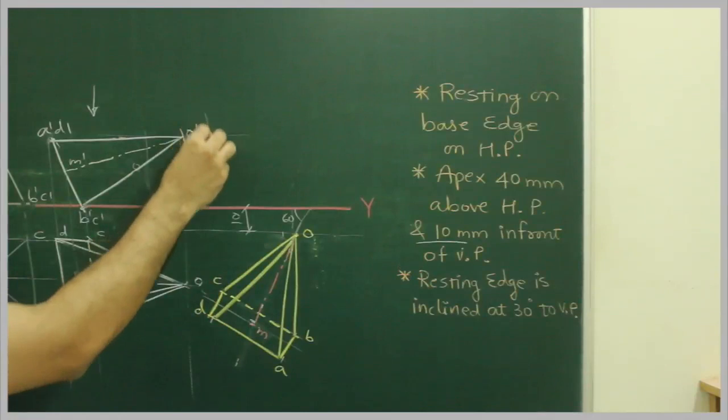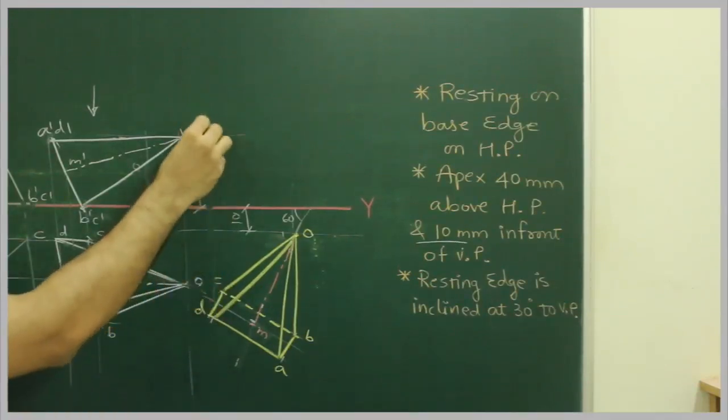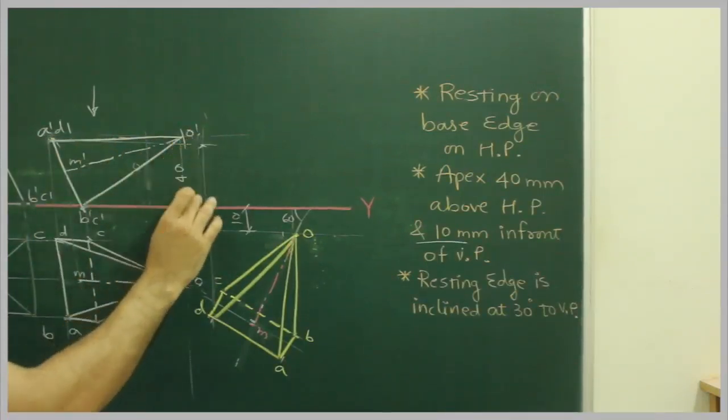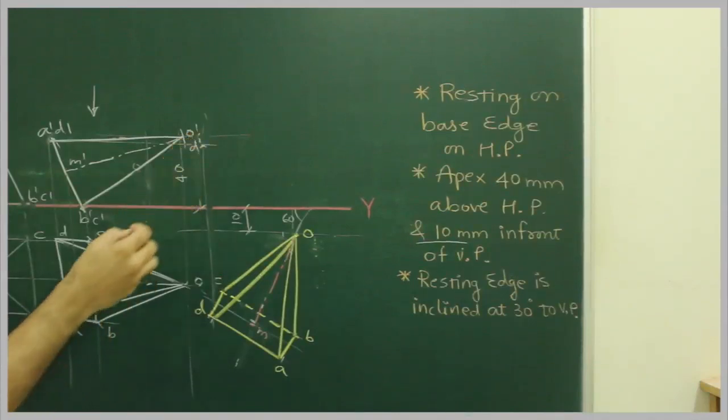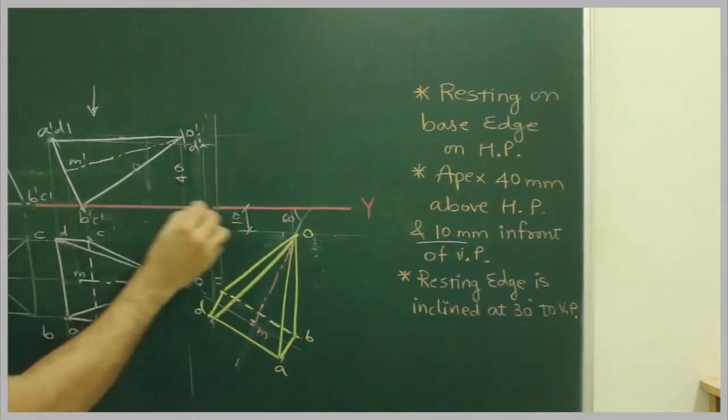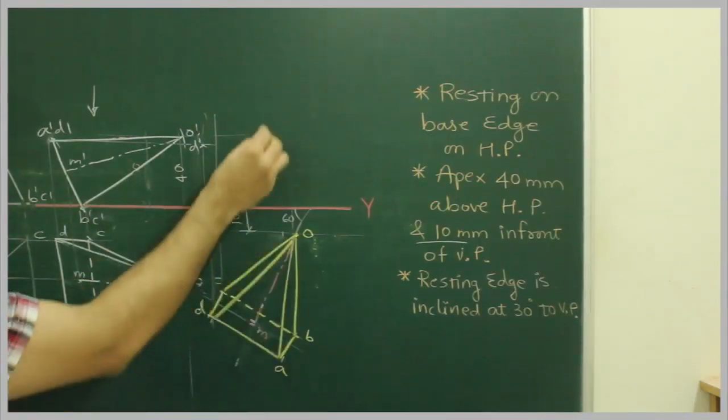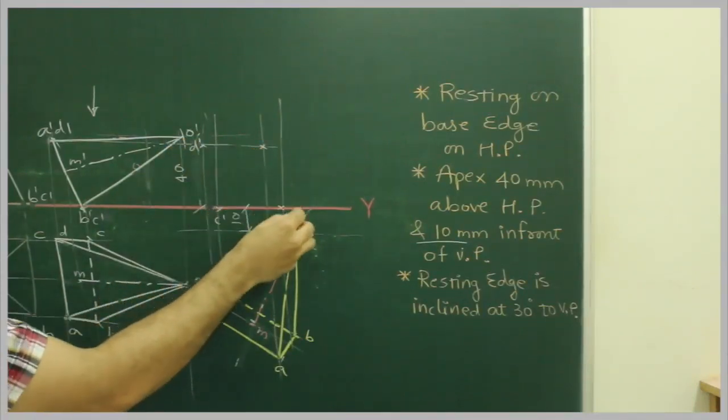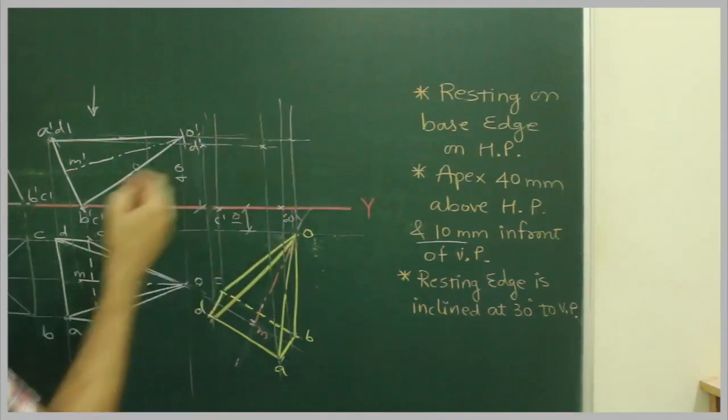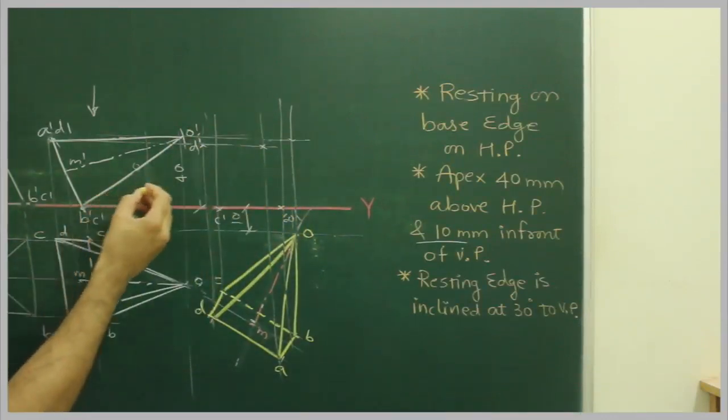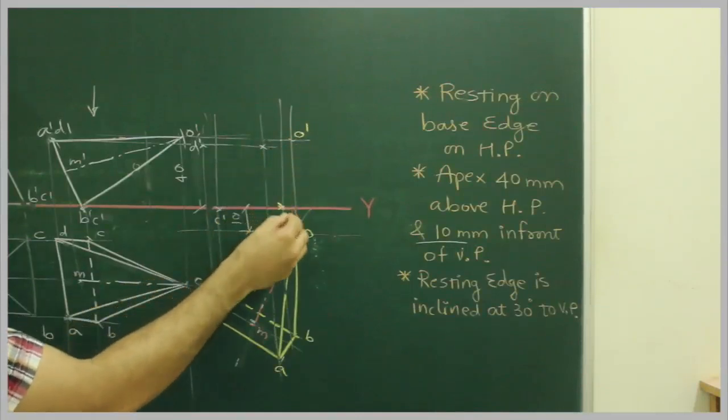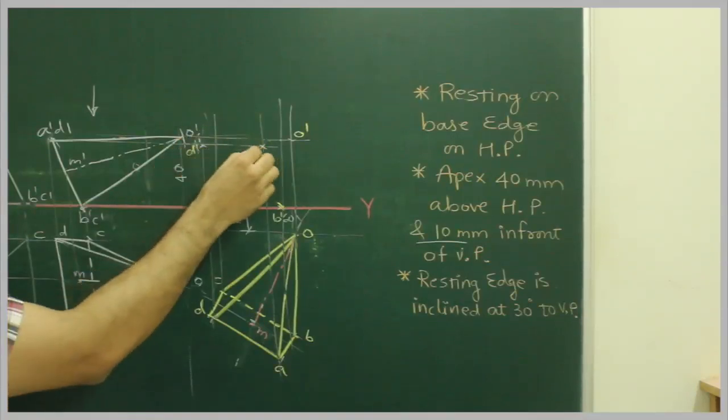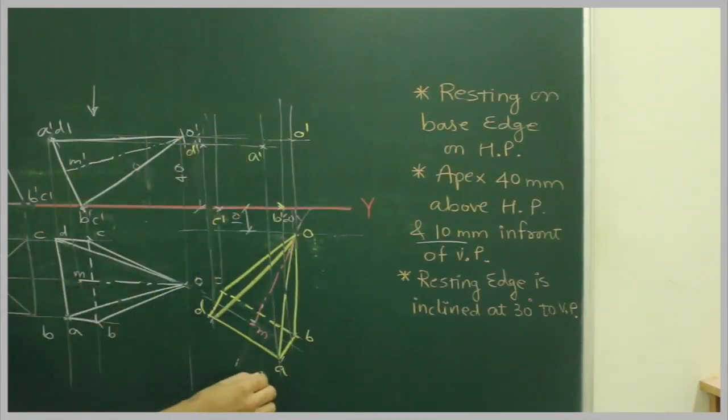Then we project D from here, and D dash from here. So we get D dash over here. C from here, C from here. D dash, A and B. A will be here, C will be here. O is here. Just to mark all these points. That is O dash, this is B dash, C dash, D dash, and A dash. Now that observer will see from here.